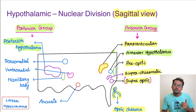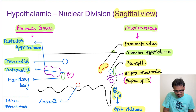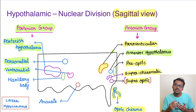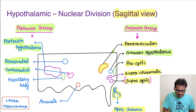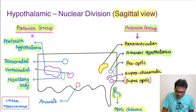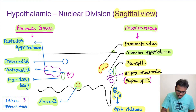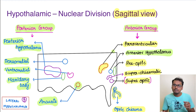The posterior group also includes two medial nuclei: the dorso medial and the ventromedial. One more important nucleus in the posterior group is the mammillary body, which we saw in the limbic system — it receives input from the hippocampus and sends it to the thalamus via the mammillothalamic tract. There is also the arcuate nucleus.